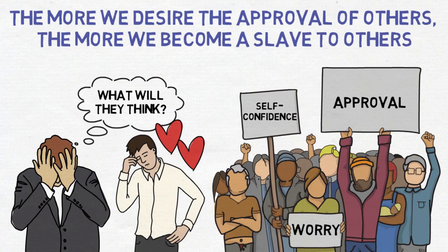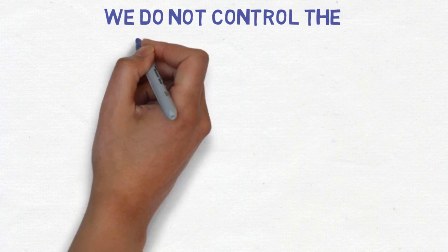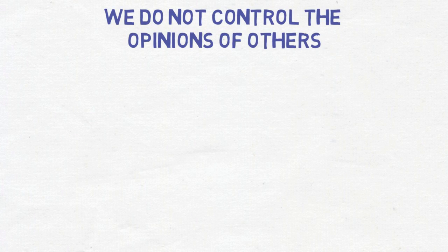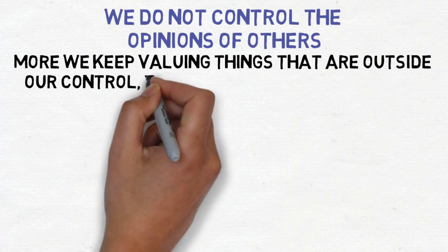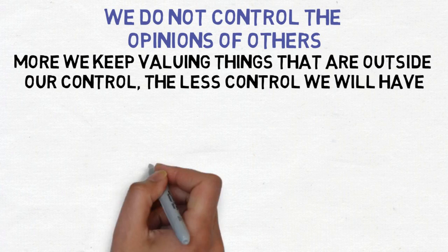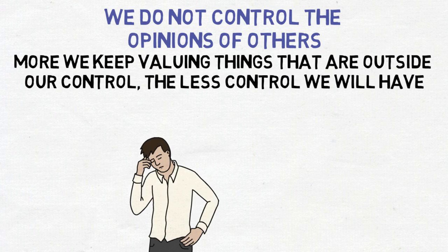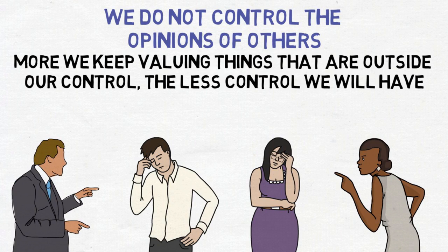The ancient Stoics were way ahead of time when it came to not being influenced by other people's opinions. They pointed out that we do not control the opinions of others and that things we do not control are irregular and the more we keep valuing things that are outside of our control, the less control we will have. The truth is, no matter how hard we try, we can never please 100% of others. No matter how hard we try, there are always going to be people who will resent you, be jealous of you, judge you, hate you, reject you and so on.